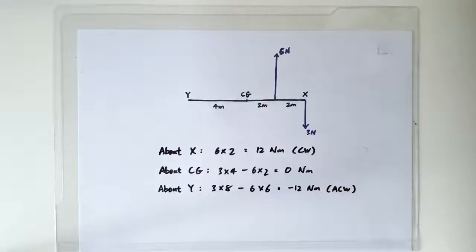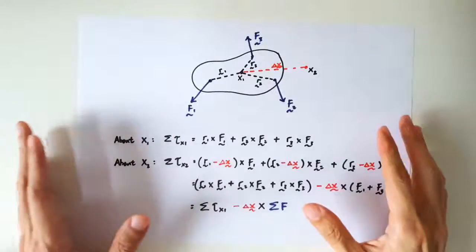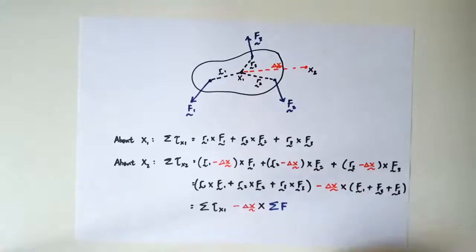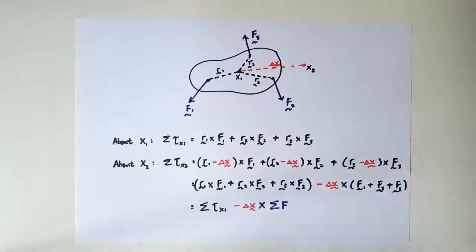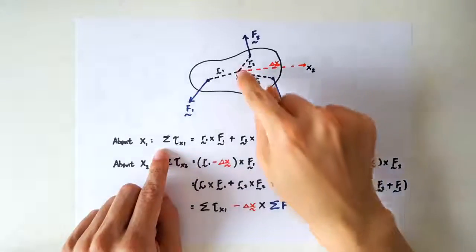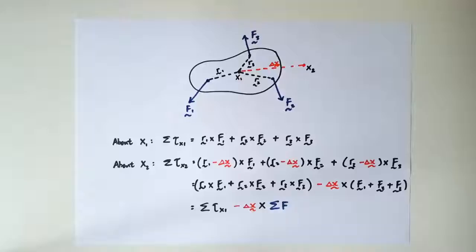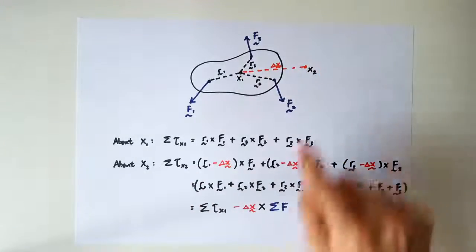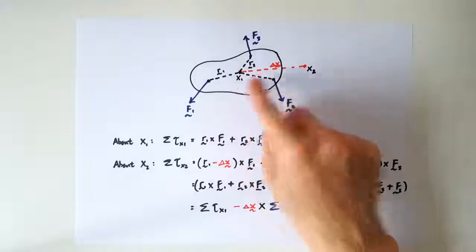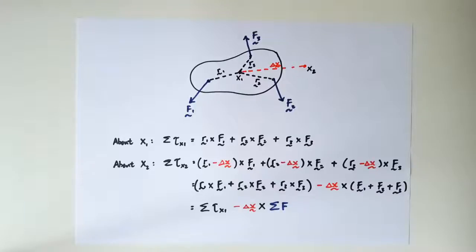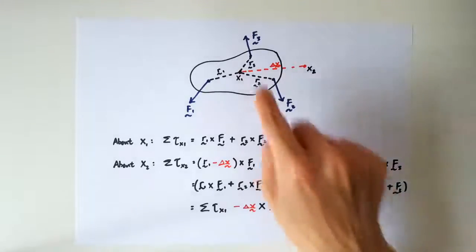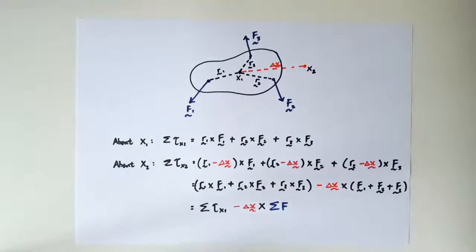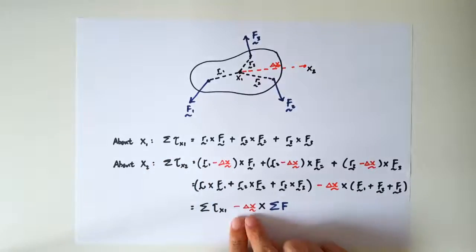I have a mathematical proof here. It involves some vector algebra, which means you don't have to know this for example purposes. Anyway, this is the moment evaluated about x1, and this is the moment evaluated about x2. So x2 is shifted from x1 by this amount delta x. So it can be shown mathematically that when you shift your pivot point by delta x, then the net moment is going to change by this amount here.